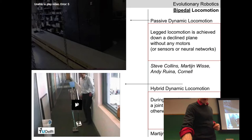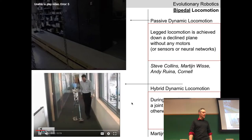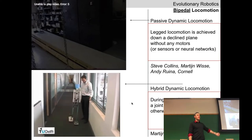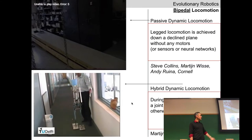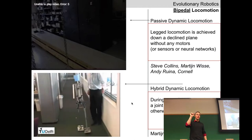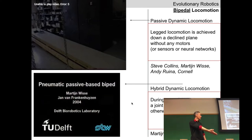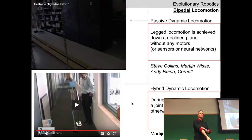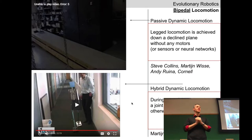Taking a passive dynamic walker and adding motors and sensors to it — in the case of 'Denise' — every once in a while a motor gives a small impulse force, a kick to the leg. The leg then passively rotates forward, lands, becomes the stance leg, supports the robot, moves backward, and gets another kick. There's no continuous actuation — just intermittent pulses. That's what makes a hybrid dynamic walker.